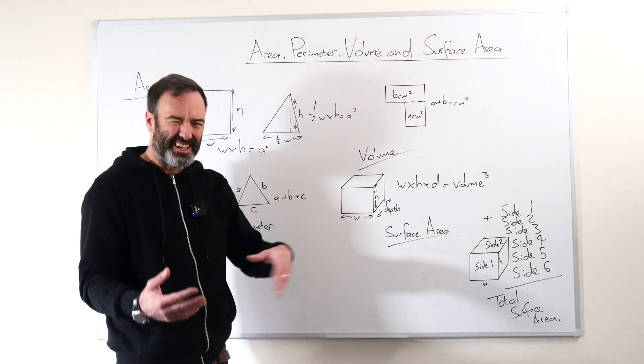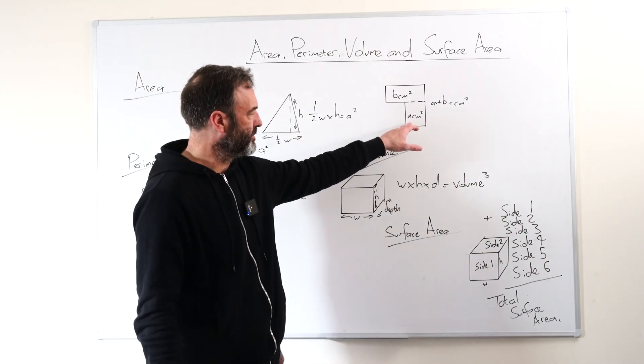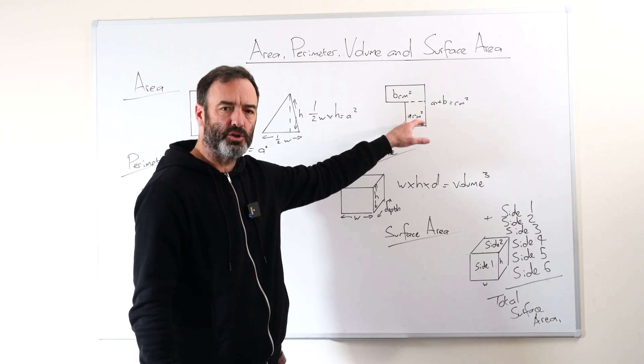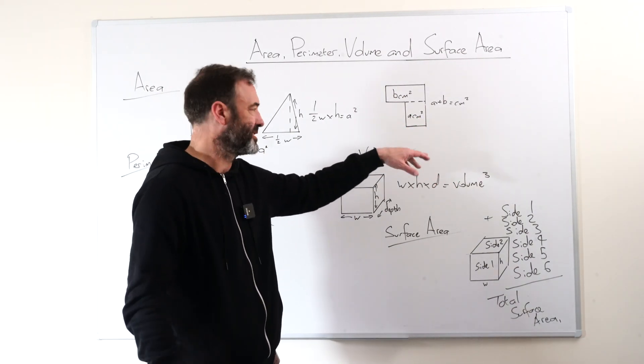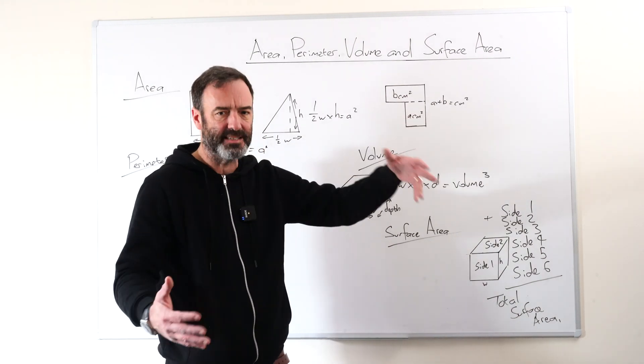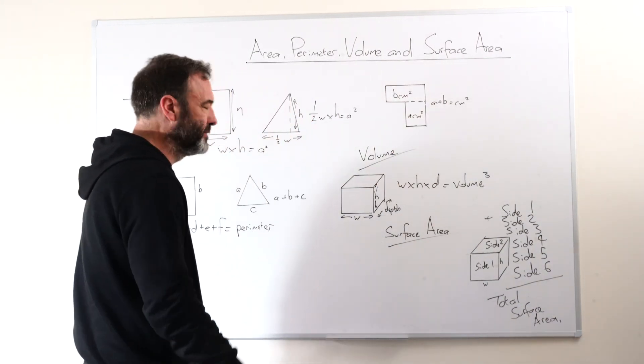Sometimes it can get a bit more tricky where you can have something cut out here. So you'd have to subtract a smaller area if there was some kind of cookie cutter type situation or something you had to exclude. Not too difficult though.